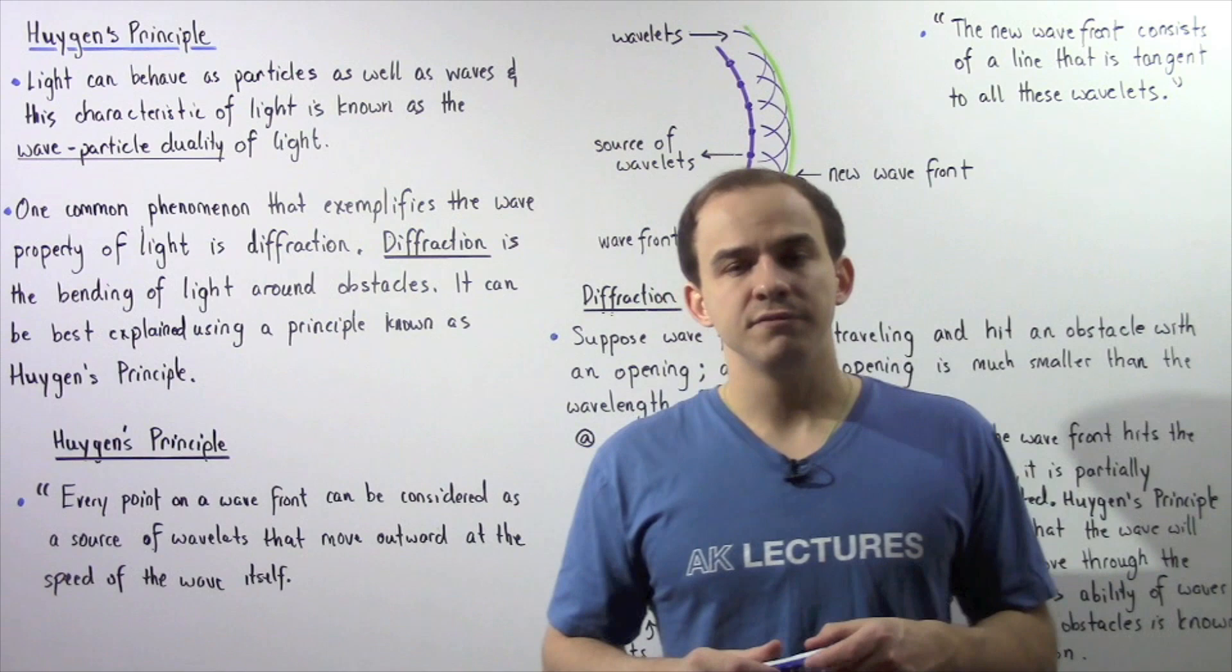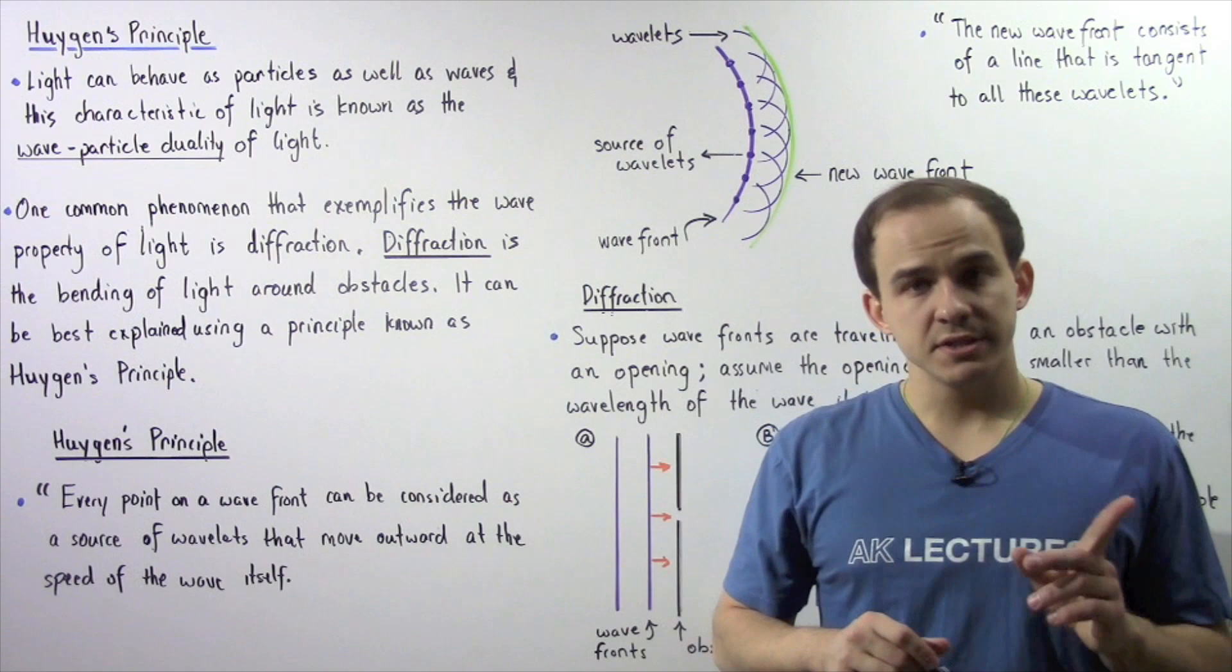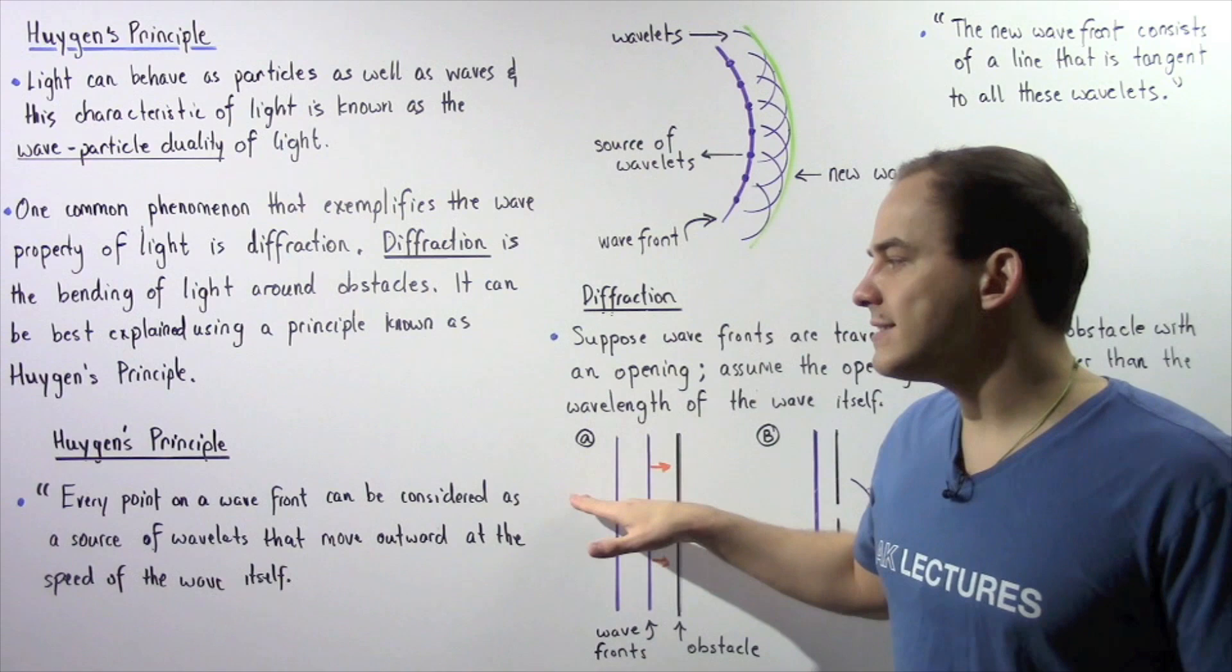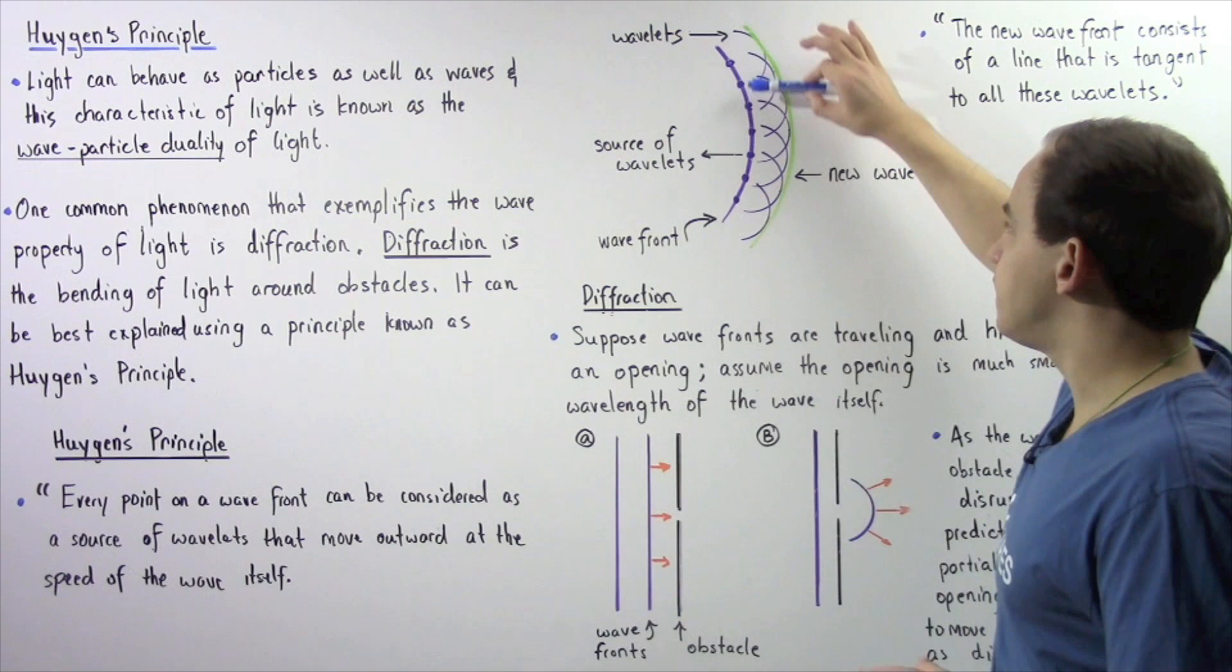Diffraction is essentially the bending of light around obstacles. Diffraction can be explained by using a principle known as Huygens principle. Huygens principle states that every point on a wave front can be considered as a source of individual wavelets that move outward at the speed of the wave itself.